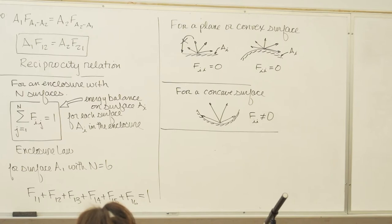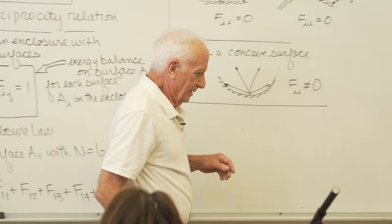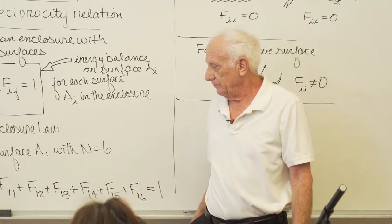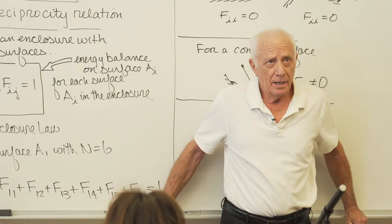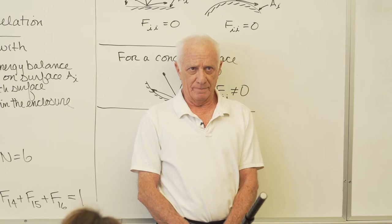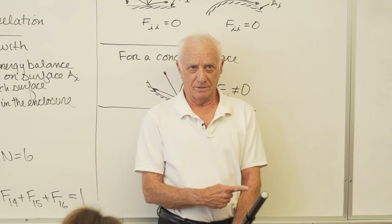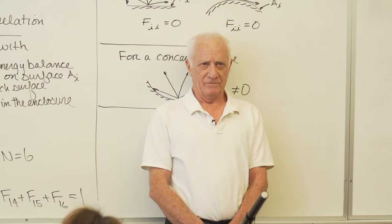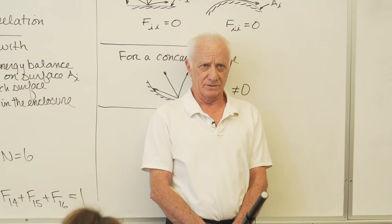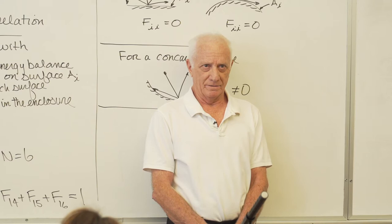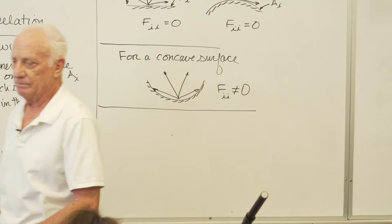Where did it get its name, view factor? There are other names — configuration factor, geometric factor — but the textbook uses view factor. It relates to your view from your eyes. If I pretend I'm surface A1, the front of the blackboard, and look straight out, what do I see the most of? The back wall — probably 60 to 65 percent of my view. The hall side wall and window side wall I see the least of, maybe 10 to 15 percent. That's the view factor.